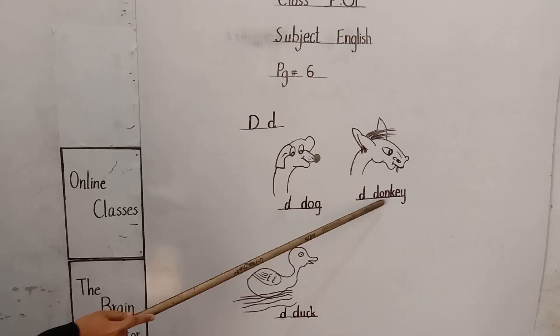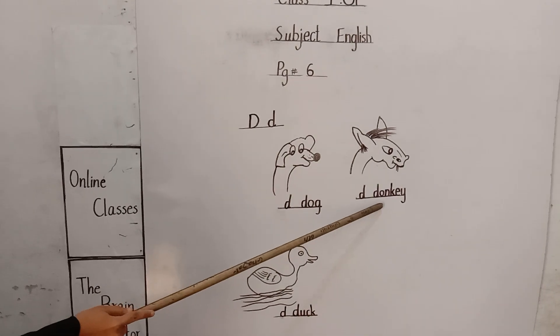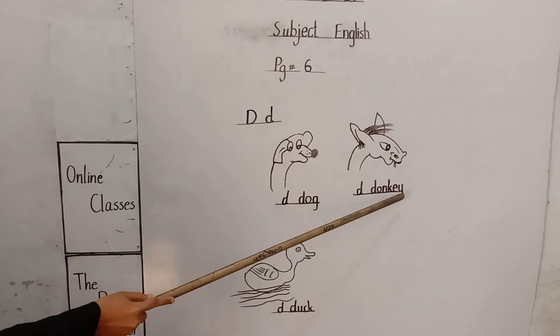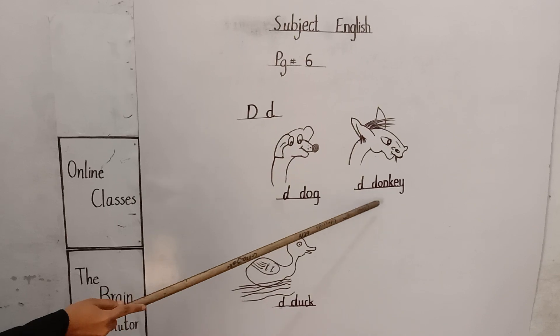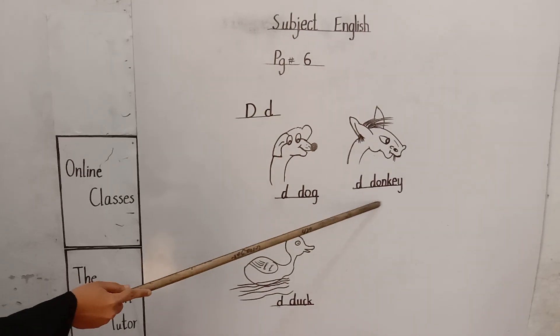D for donkey. What is this word? Donkey. D-O-N-K-E-Y, donkey. What is this word? Donkey.